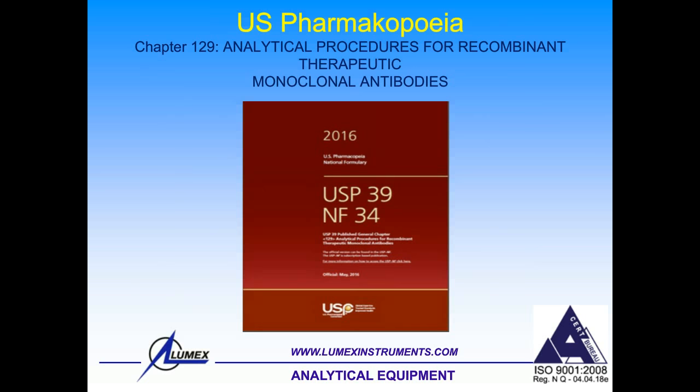For United States Pharmacopeia, the general article about CE has been existing for quite a long time, but only last year in 2016 a special chapter 129 appeared — 'Analytical Procedures for Recombinant Therapeutic Monoclonal Antibodies.' In this chapter it is clearly stated in all details how capillary gel electrophoresis can be used for the determination of recombinant therapeutic monoclonal antibodies of the IgG class, and how we use these prescriptions on our instruments.